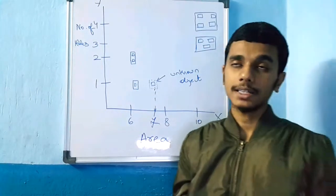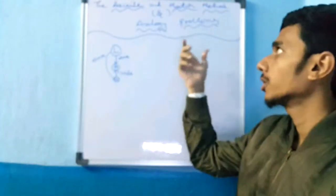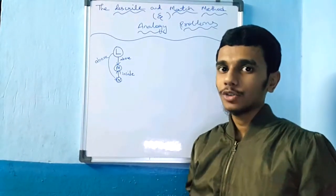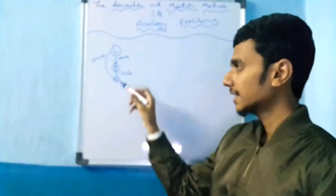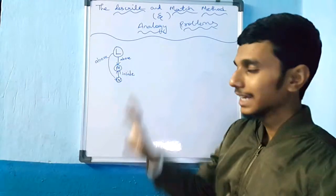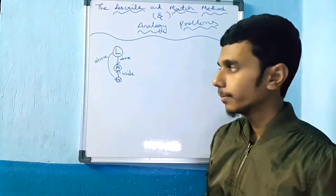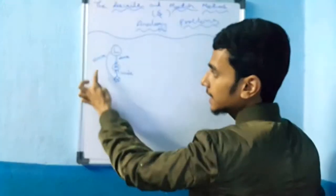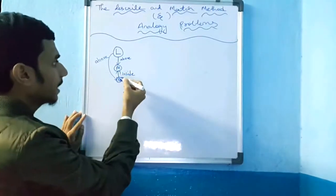Next I'll show you in a semantic way how we can describe and match and represent objects. Now we are moving to the next topic related to the describe and match method — that is the analogy problem. We use the describe and match method in this analogy problem. See this example: there are three objects — L, M, and N. The arrows tell us that L is above N, and N is inside M.